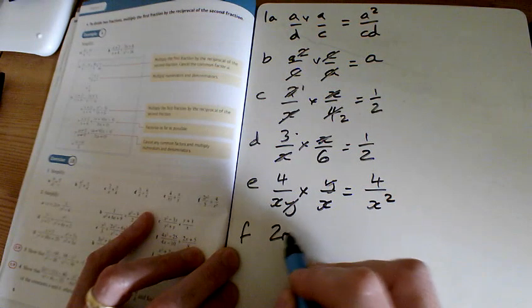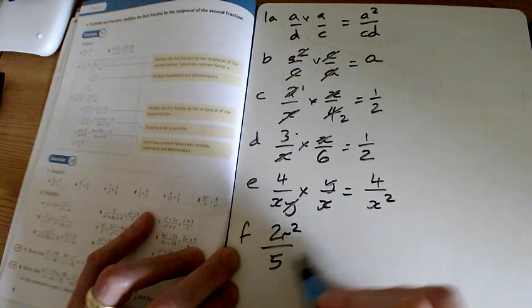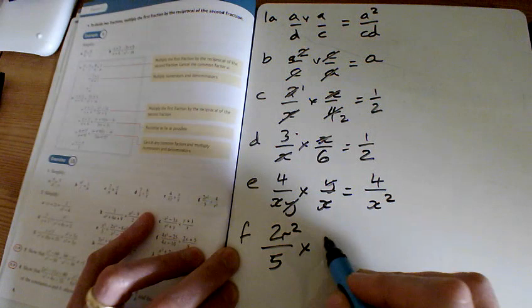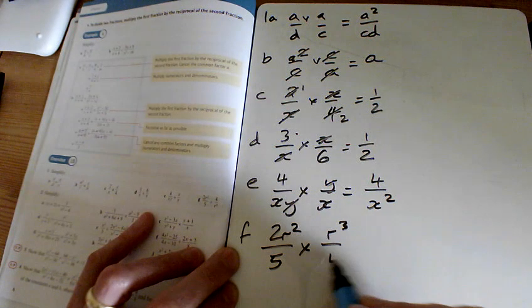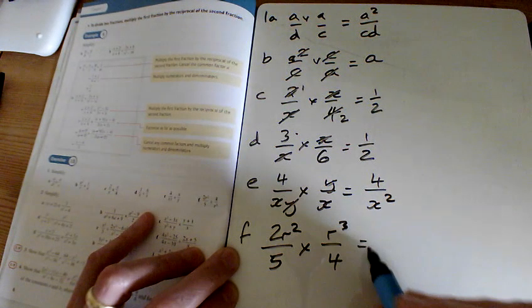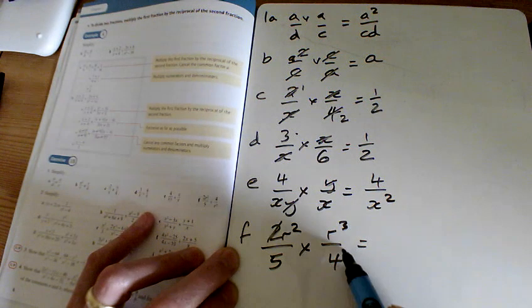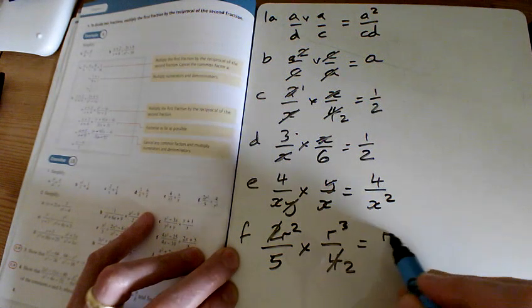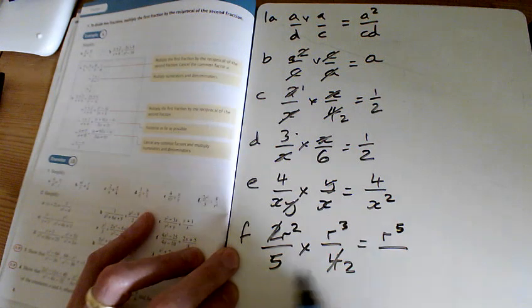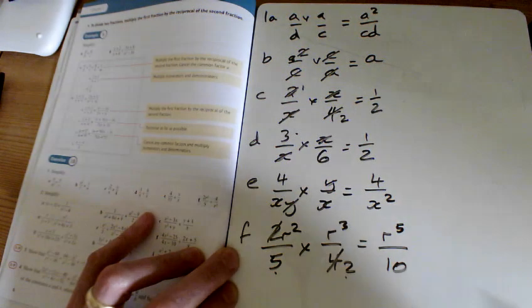The last one of the first question is in terms of r. So again, I'm going to multiply by the r cubed over 4. On the top here, well, actually, we can do a tiny cancel there, can't we? We've got 2s into that and 2s into that, giving you a total of r to the 5 on the top, and 5 times 2 on the bottom is 10.